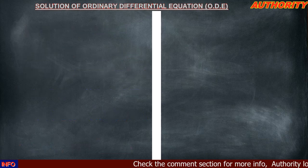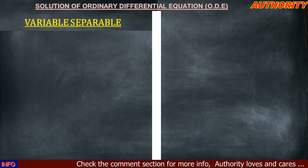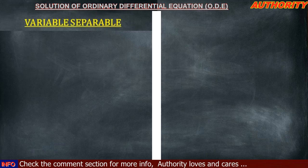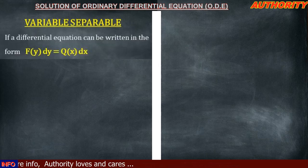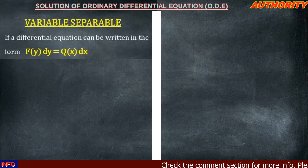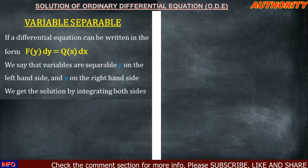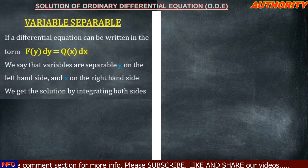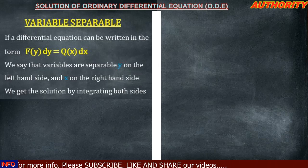We are going to consider standard methods to use in solving these differential equations. The first one is variable separable — that is, variables or differential equations which can be separated. We say that if a differential equation can be written in the form f(y) dy = f(x) dx, where the function of y dy is on one side and q(x) dx is on the other side, then this equation is separable. We get the solution by integrating both sides.